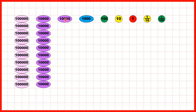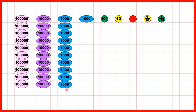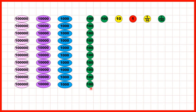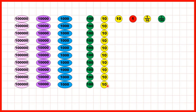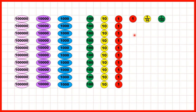If we have one ten thousand counter, we can exchange that for 10 thousands counters. If we have one thousands counter, we can exchange that for 10 hundreds. One hundred can be exchanged for 10 tens. One ten can be exchanged for 10 ones, and one one can be exchanged for 10 tenths.